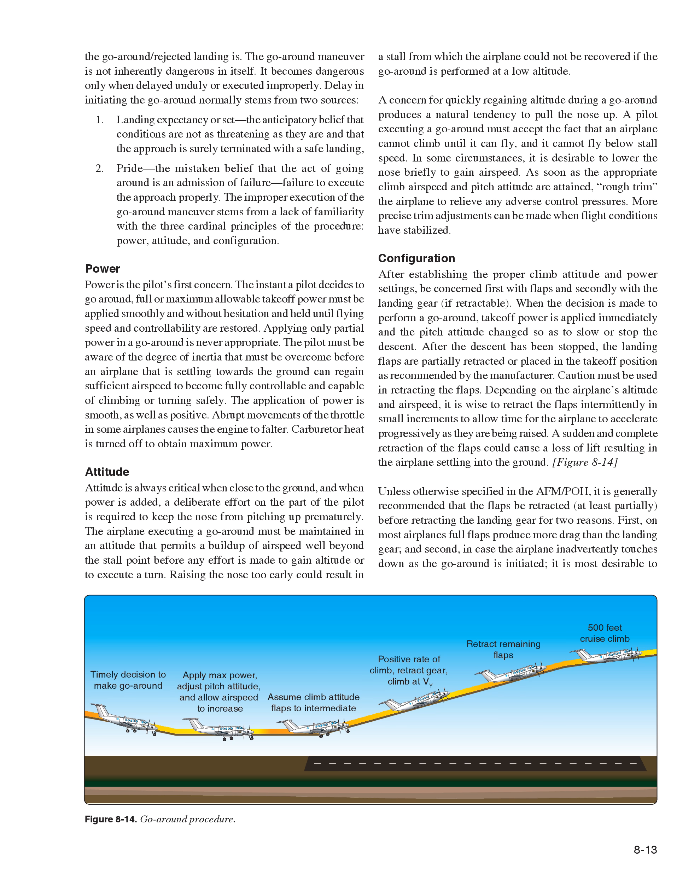Power is the pilot's first concern. The instant a pilot decides to go around, full or maximum allowable takeoff power must be applied smoothly and without hesitation and held until flying speed and controllability are restored. Applying only partial power in a go-around is never appropriate. The pilot must be aware of the degree of inertia that must be overcome before an airplane that is settling toward the ground can regain sufficient airspeed to become fully controllable. The application of power is smooth as well as positive. Carburetor heat is turned off to obtain maximum power.